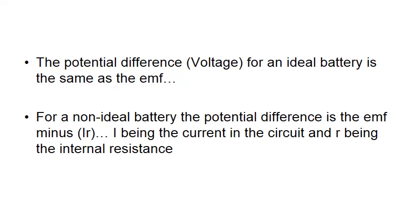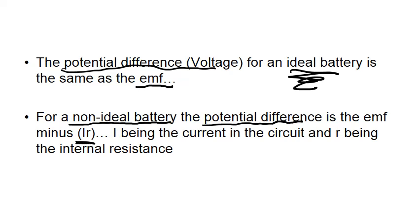The potential difference for an ideal battery is the same as the EMF. If we had no internal resistance, the voltage would be the same as the EMF. However, for a non-ideal battery, the potential difference is the EMF minus IR—the current times the resistance inside.